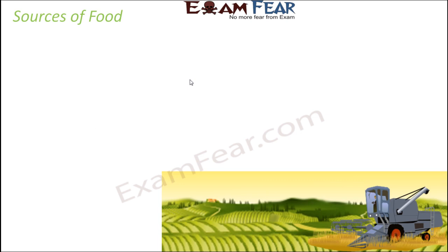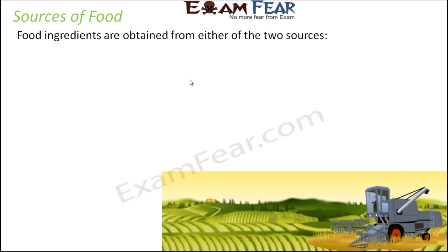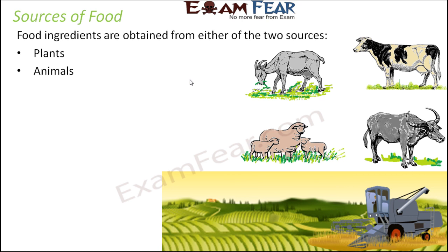If you look at the sources — the main sources from which we receive food — you will see that all food ingredients are obtained from either of two sources: plants or animals. For example, vegetables, fruits, and cereals are all obtained from plants. On the other hand, meat, egg, and milk are all obtained from animals. So basically all types of food ingredients are either obtained from plants or from animals. Let us look at both sources one by one.